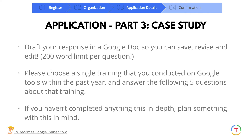Then we move into what they call the case study, which is really important and something that could take you a long time to develop depending on what you have already done as a trainer. Draft your response in a Google Doc so you can save, revise, and edit — the questions have a 200-word limit per question, which goes pretty quickly, so you want to be concise. The question is: please choose a single training that you conducted on Google tools within the past year and answer the following five questions about that training.